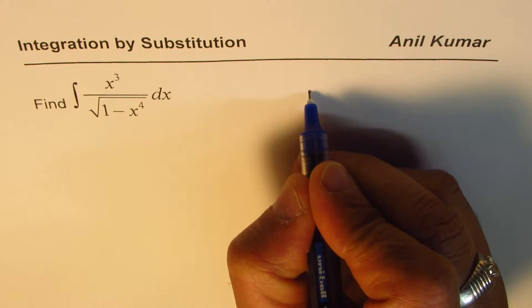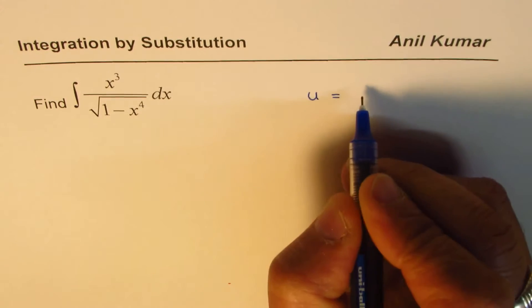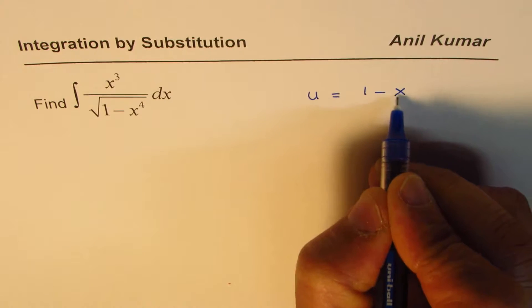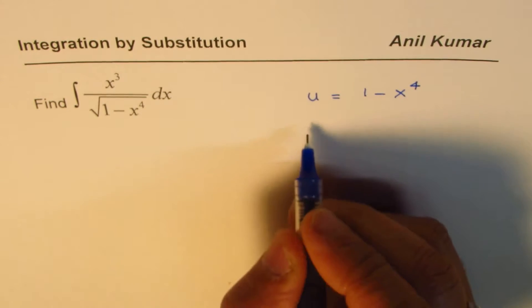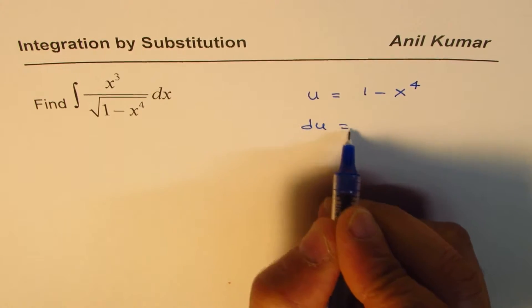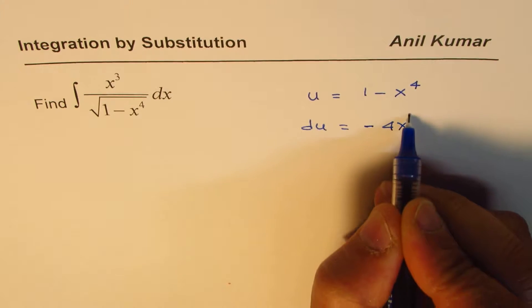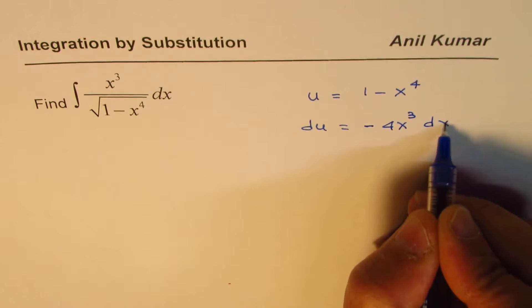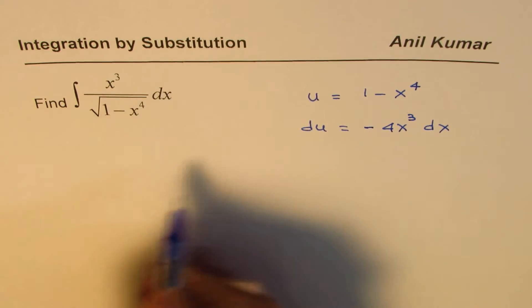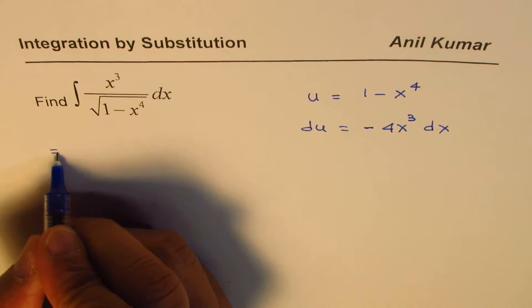So let me substitute u as equal to 1 minus x to the power of 4. Now if I do that, then du is equal to minus 4x cube dx. Now we have x cube dx here. So let's rewrite the given question.